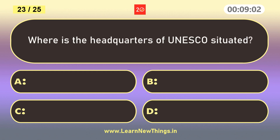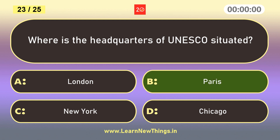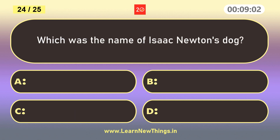Where is the headquarters of UNESCO situated? Paris. What was the name of Isaac Newton's dog? Diamond.